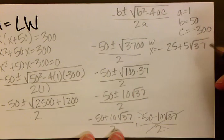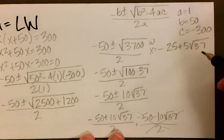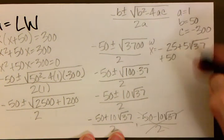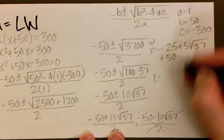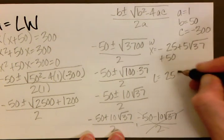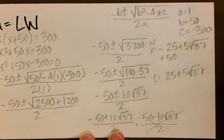Now remember that it said that our length was x plus 50. So we're just going to go ahead and take the answer we got for the width and add 50. And that's going to give us our length, which is 25 plus 5 square root 37. And those are our answers.